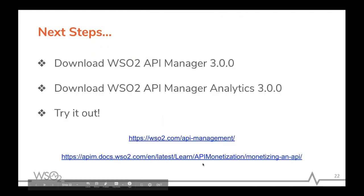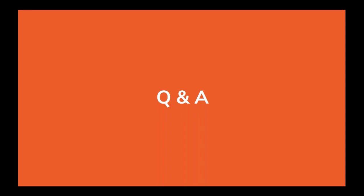That concludes the demo. You now have an understanding of why API monetization is needed, the four main monetization models for APIs, and the monetization model supported out of the box in WSO2 API Manager. The demo showed how to use WSO2 API Manager, API Manager Analytics, and Stripe accounts to implement a usage-based billing model. You can download both products and try it out yourself using the included links to the servers and configuration documentation.